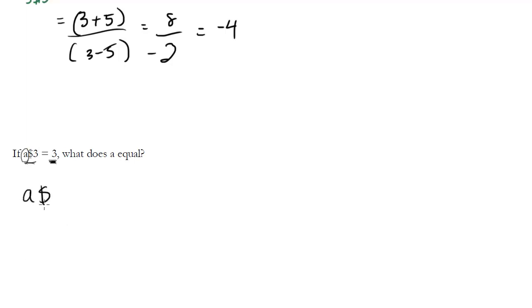I know that a $ 3 would be, according to my formula, (a + 3) over (a - 3). And I know this whole thing would equal 3 because that's what it says—that's the output. So now I just go ahead and solve for a.